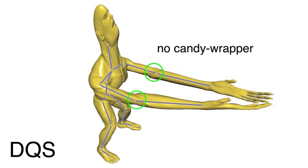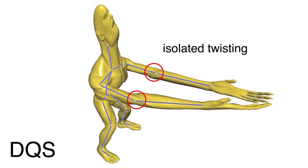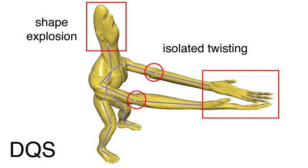Dual quaternion skinning eliminates joint collapse and candy wrapper artifacts. But twisting is still isolated near joints, and stretching still causes shape explosion.